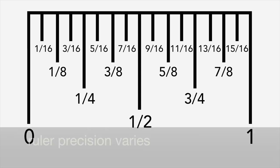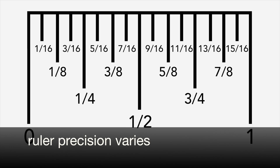Some rulers may not have the smallest one sixteenth inch lines, while others may have even smaller lines that are closer together, measuring to one thirty-second of an inch of accuracy.